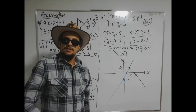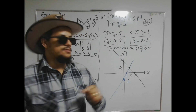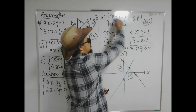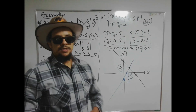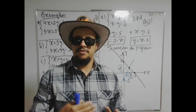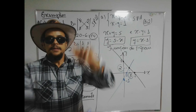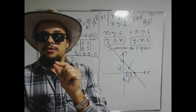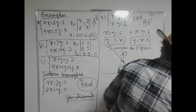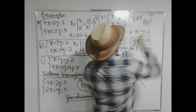Pode aparecer numa questão de prova: dado o sistema linear, qual dos gráficos abaixo representa a solução? Você pega os pontos do gráfico e substitui. Se não quiser substituir, calcula delta, delta-x, delta-y — se tiver delta-z também — e faz as divisões. Sua solução vai te dar o ponto de interseção das retas. Lembrando que o primeiro valor é x e o segundo é y. Esse é o gráfico do sistema SPD.